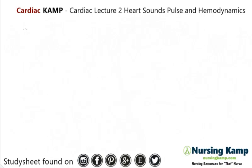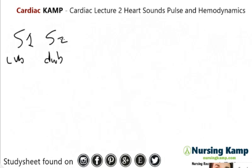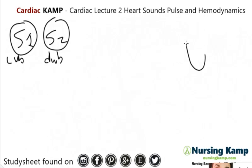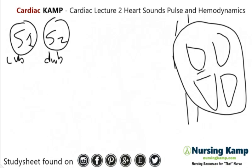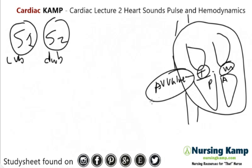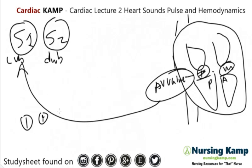Previously in the last lecture we talked about heart structure, and today we're going to talk about S1 and S2, which you might have heard called lub and dub. These are the valves closing. The tricuspid and the mitral are your AV valves, and the sound you hear when they're closing is S1. S1 is the closing of these valves, which is important for hemodynamics, cardiac output, and perfusion in the body.